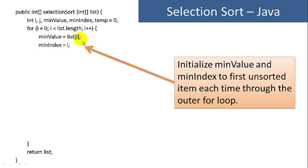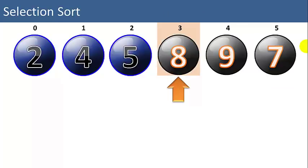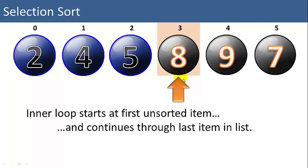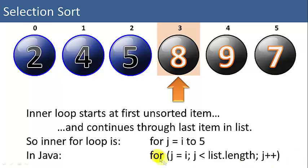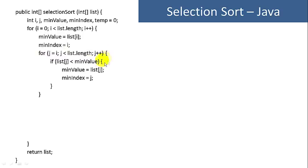Inside the outer for loop, we need to initialize minValue to the current item of the list — the first unsorted item — and minIndex to the first unsorted index. Each time through the outer for loop, we have to do that. For the inner for loop, we want to start at the first unsorted item and continue through to the last item in the list. In Java: for(j = i; j < list.length; j++). That will iterate through the remaining items, and we'll put that code for the inner for loop in our method.